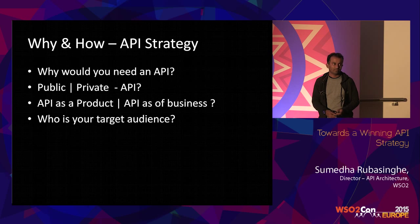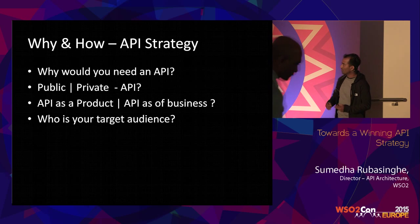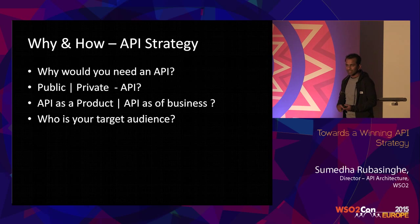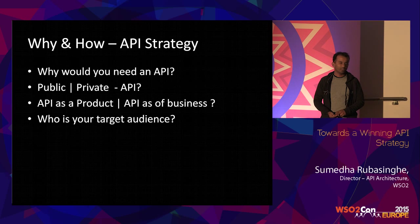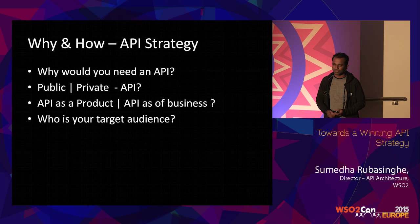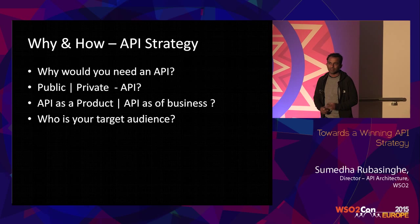And then there are customers for whom the API is their product — that is the only thing. For example, in the case of StubHub, they actually had their own ticketing business and they just wanted to expose a public API so that they can expand their business. Whereas if you take a customer like Apiculture, they are a Spain-based linguistic company whose main product is the API — they basically sell linguistic services via APIs.